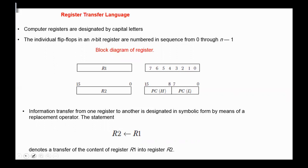Computer registers are designated by capital letters — for example, R1, R2, Address Register, Memory Buffer Register, Program Counter, etc. The individual flip-flops in an n-bit register are numbered in sequence from 0 through n-1.